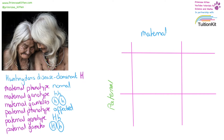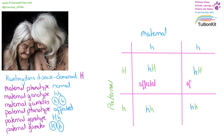We can then take the gametes and put them into our genetic cross. The mother's gametes are lowercase h, lowercase h, and the paternal gametes are uppercase H and lowercase h. Filling in the Punnett square: because Huntington's is dominant, you only need one gene to become affected. Two of the babies will be affected and two will be normal. So if you have one parent who is heterozygous for Huntington's disease, you have a 50% chance of getting the disease yourself.